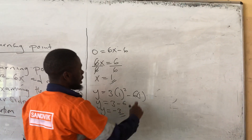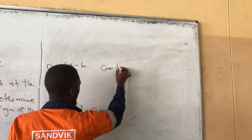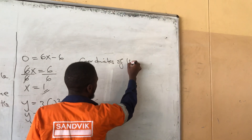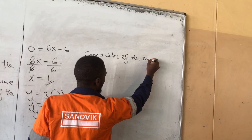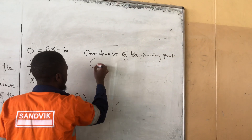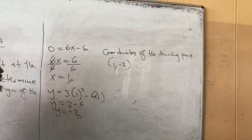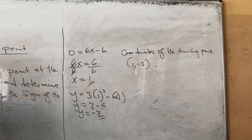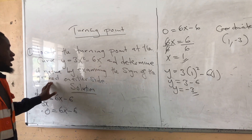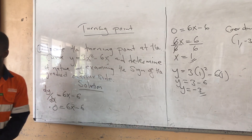The coordinates of the turning point are (1, negative 3). We have found the coordinates of the turning point. The question continues by saying: determine its nature by examining the sign of the gradient on either side.